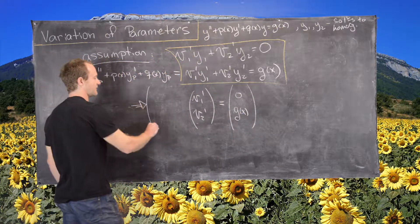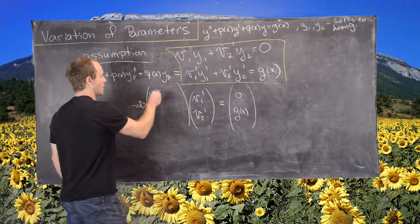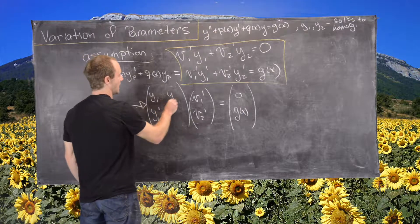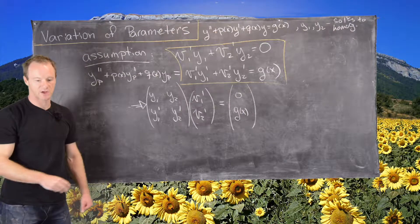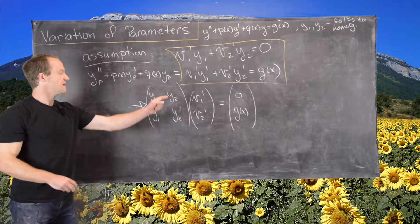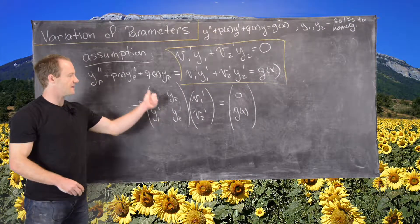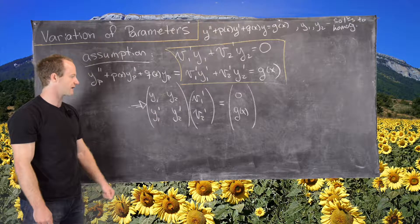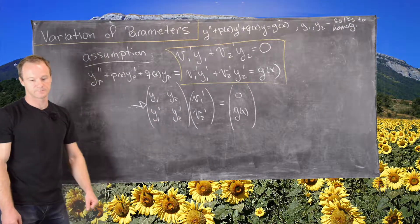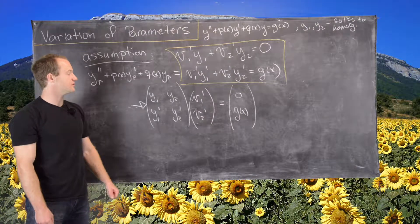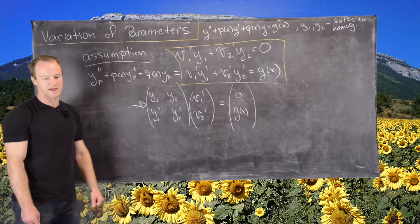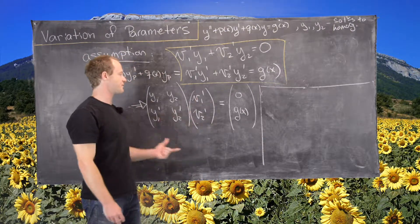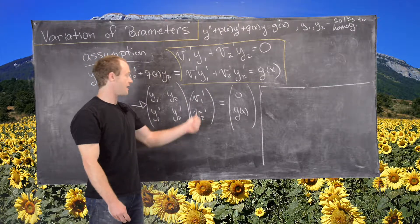The matrix here is the Wronskian matrix: y1, y1′ in the first column and y2, y2′ in the second column. This matrix is invertible because y1 and y2 are linearly independent solutions, which ensures invertibility. We can use any method from linear algebra to solve this — for instance, Cramer's rule.